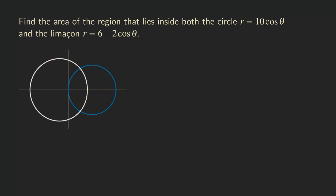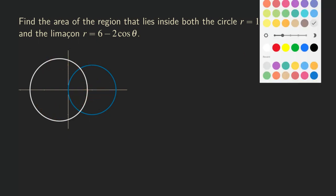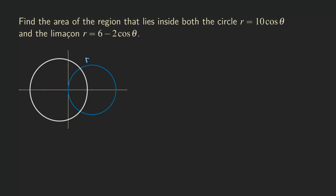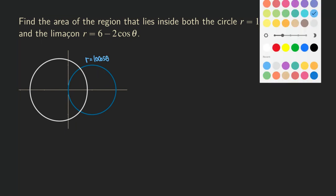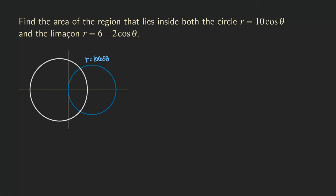So let's just label them first. We have r equals 10 cosine θ — that's our circle. And then the other one is the limaçon. The blue curve is the circle and the limaçon is r equals 6 minus 2 cosine θ.